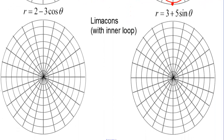For r equals 2 minus 3 cosine theta, these are limaçons with an inner loop. The reason it's an inner loop is that when cosine is positive 1, we're going to get 2 minus 3, which is negative 1. If r is ever negative, this is going to be a limaçon with an inner loop.